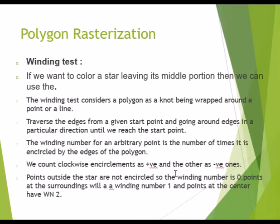The next method in inside-outside testing is the winding test. If you want to color a star leaving its middle portion, we can use this approach. The winding test considers a polygon as a knot being wrapped around the point or a line, traversing the edges from a given start point and going around edges in a particular direction until we reach the start point. The winding number for an arbitrary point is the number of times it is encircled by the edges of the polygon.